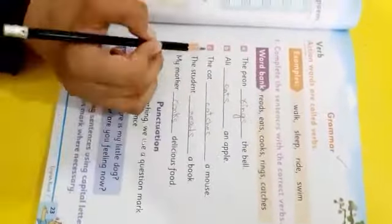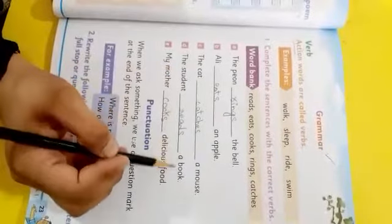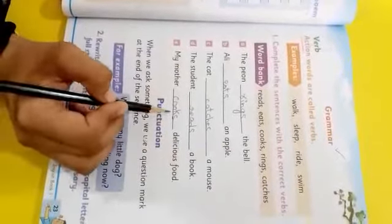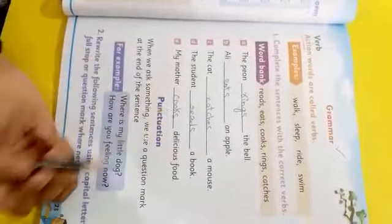D: The student (dash) a book - reads a book. And E: My mother (dash) delicious food - cooks delicious food. You have to do this in your book. This is your book work. Now, punctuation.